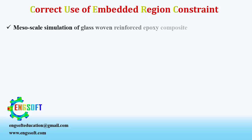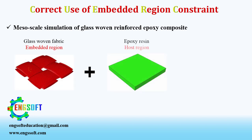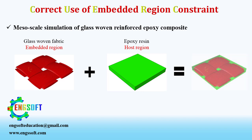Embedded region constraint is widely used in simulation of fiber-reinforced composite materials at mesoscale. In this video, we simulate a glass-woven fabric-reinforced epoxy composite with plain weave architecture at mesoscale.